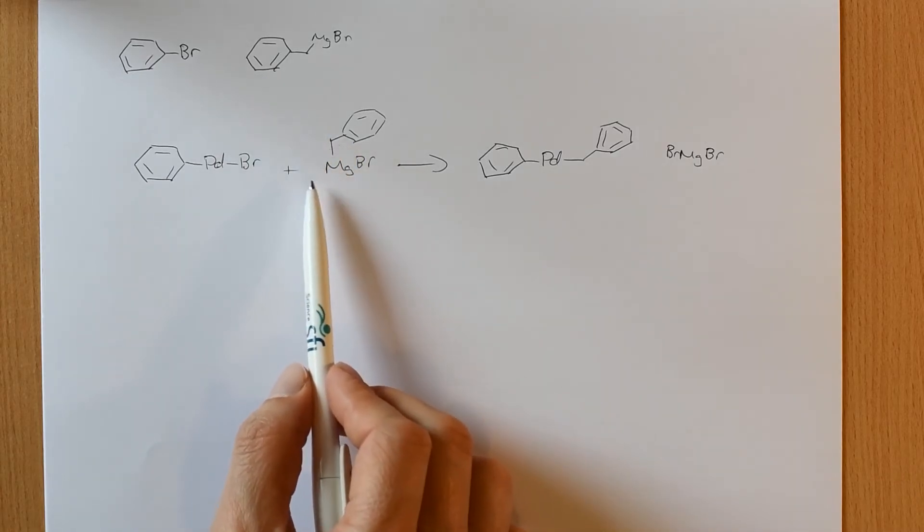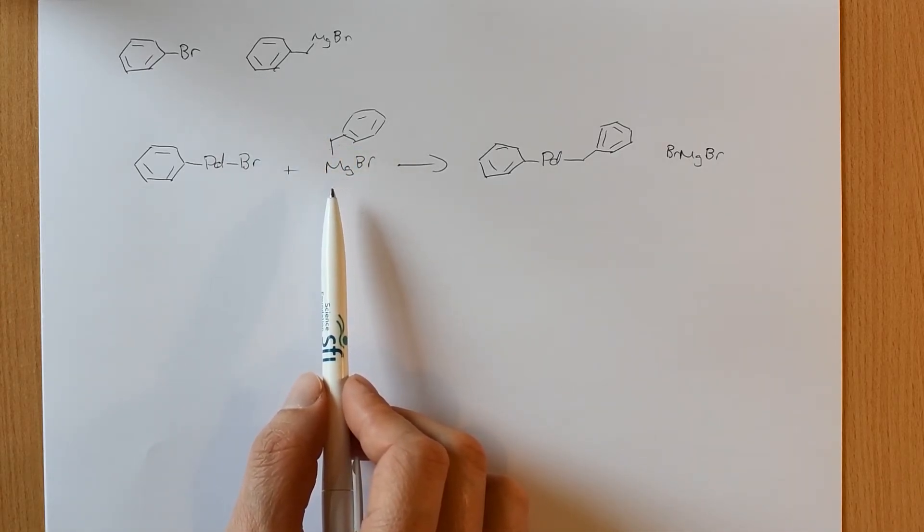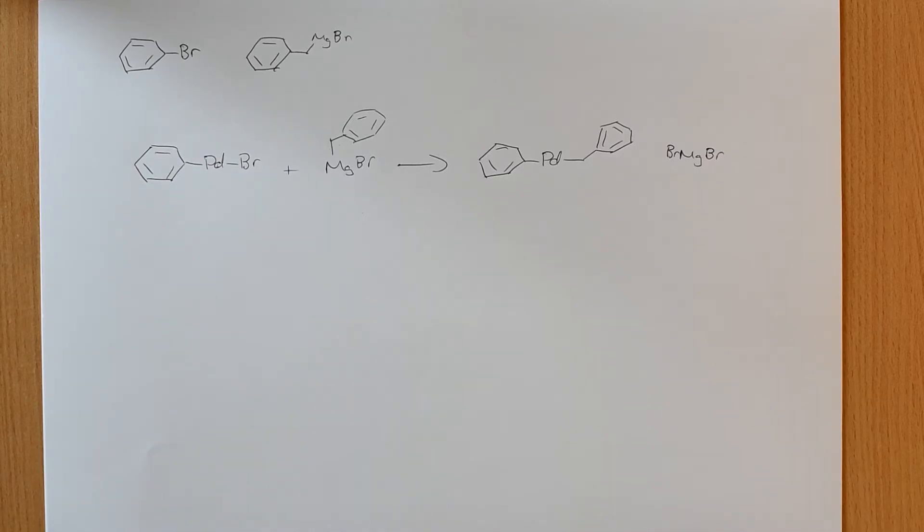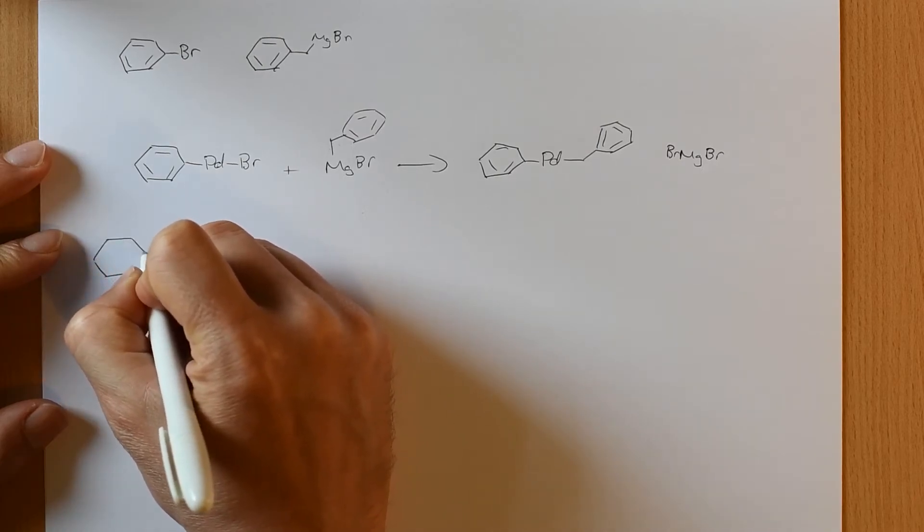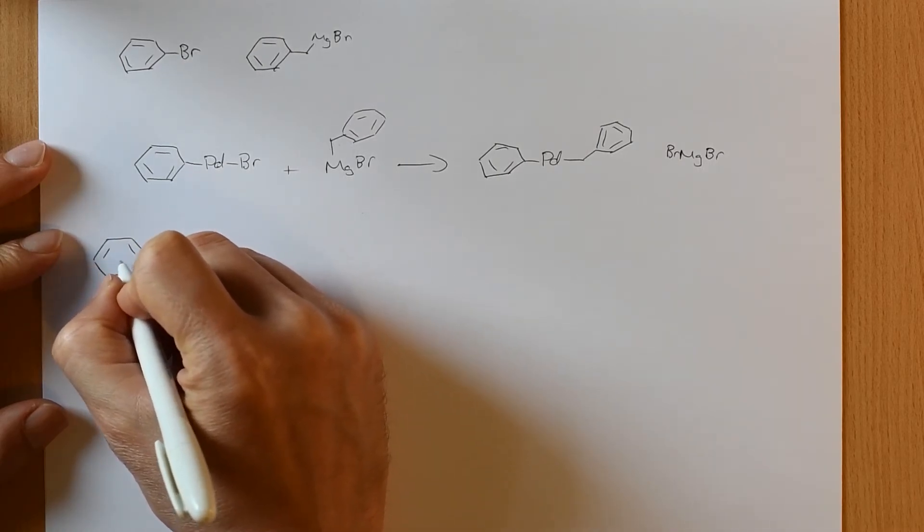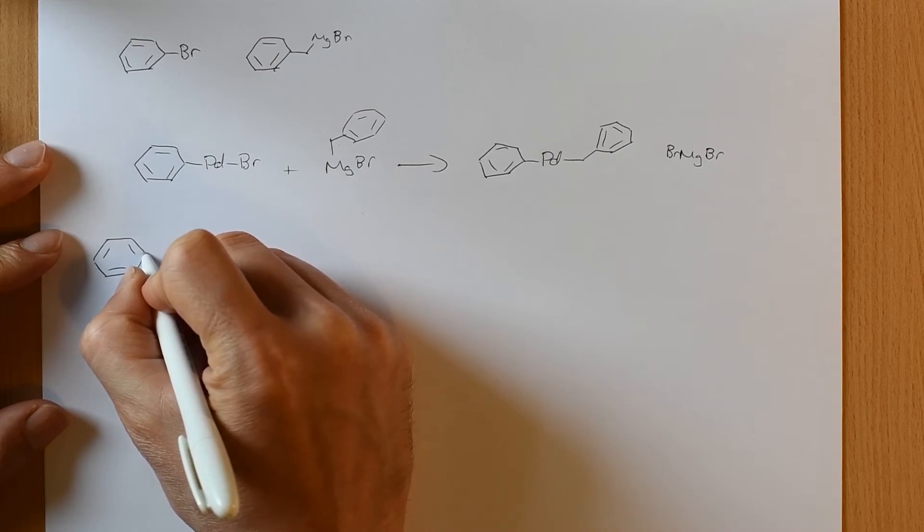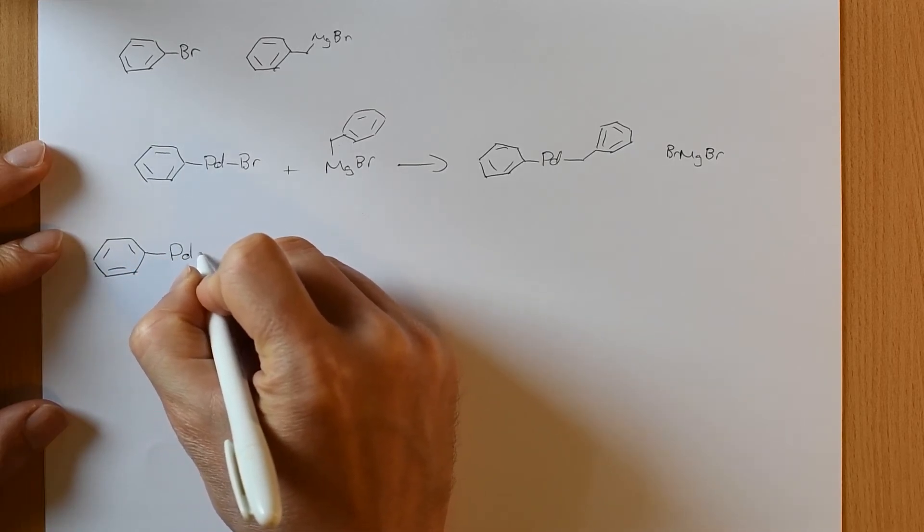It works really well in this case, in the Kumada coupling. In other cases, you need something in the reaction to promote it. So in the case of the Suzuki coupling, it actually takes place over two steps. So in the Suzuki coupling, we might have a similar situation where we are doing a coupling between bromobenzene.